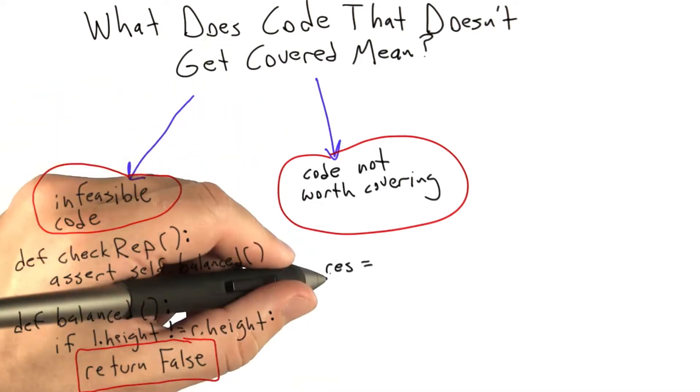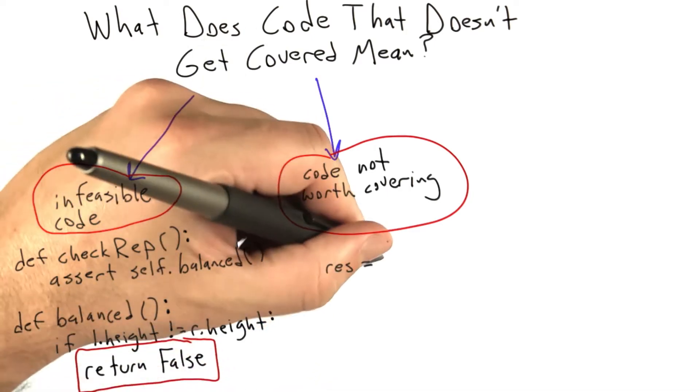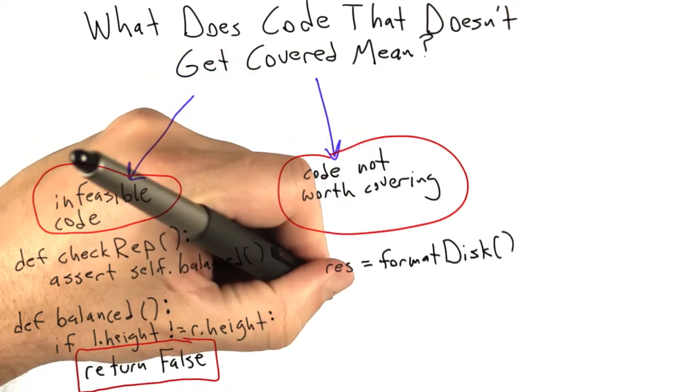Let me give a quick example. The res variable gets the result of a command to format a disk. If that operation fails, we're just going to abort the program.